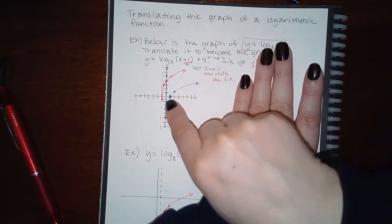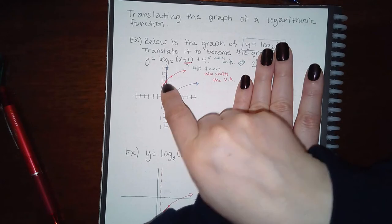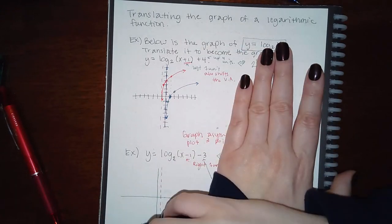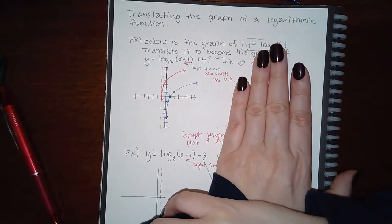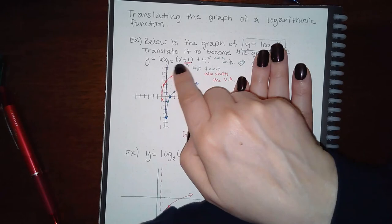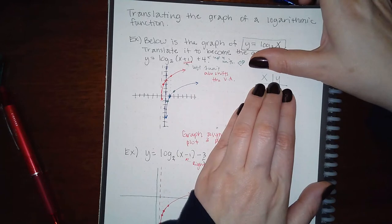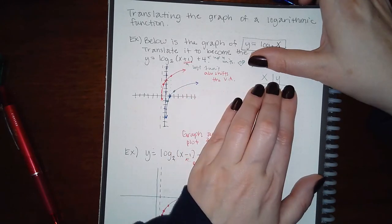I'm going to grab that vertical asymptote and slide it over one unit. I'll also grab the one point they gave me, slide it to the left one unit and then up four units, so it becomes this point right here on top of the y-axis. That's sufficient if ALEX just expects drag-and-drop. But if ALEX wants you to actually plot points, I cannot make a chart by picking x-values, because I have base 2 and you can't type base 2 into your calculator.